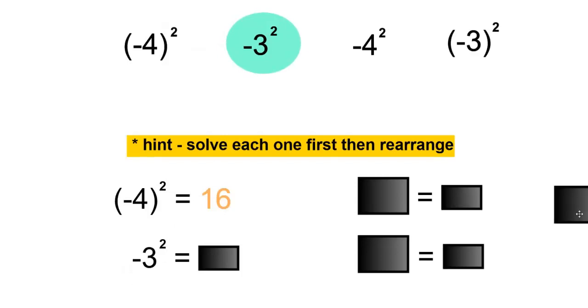Next is negative 3 to the power of 2, which is 3 times 3, that's 9, 9 times negative 1 is negative 9.